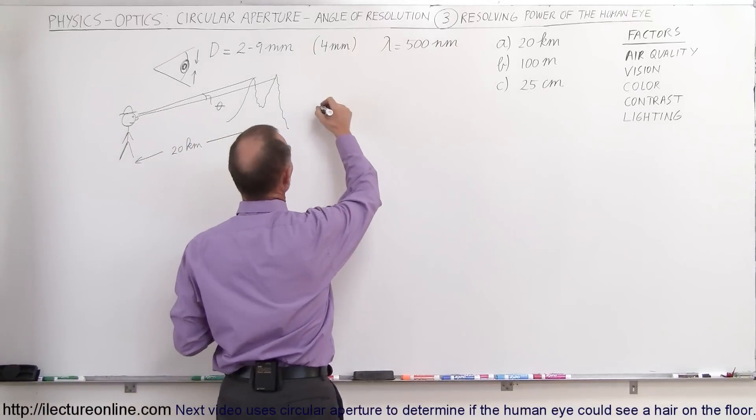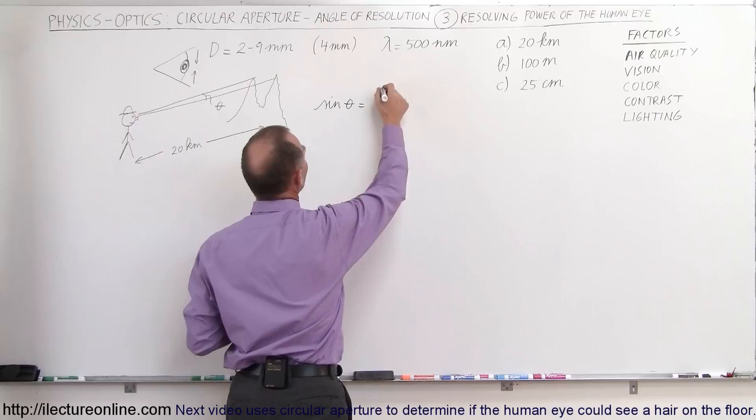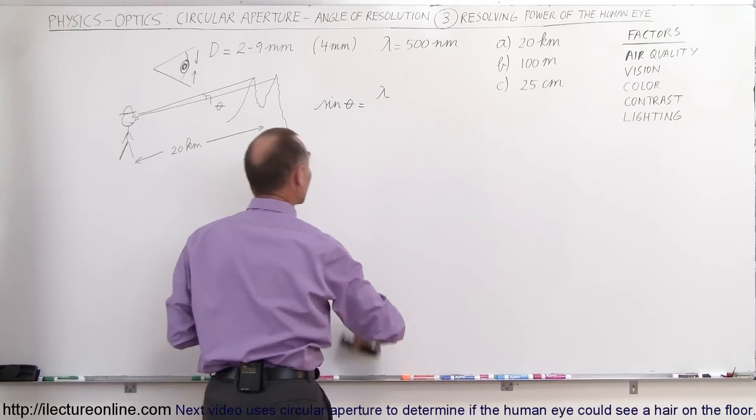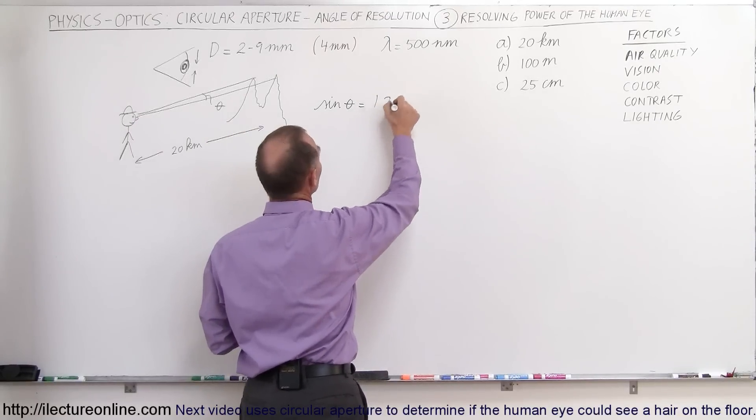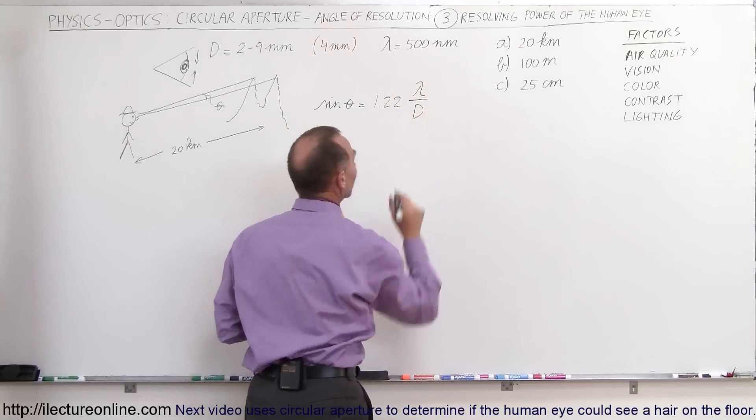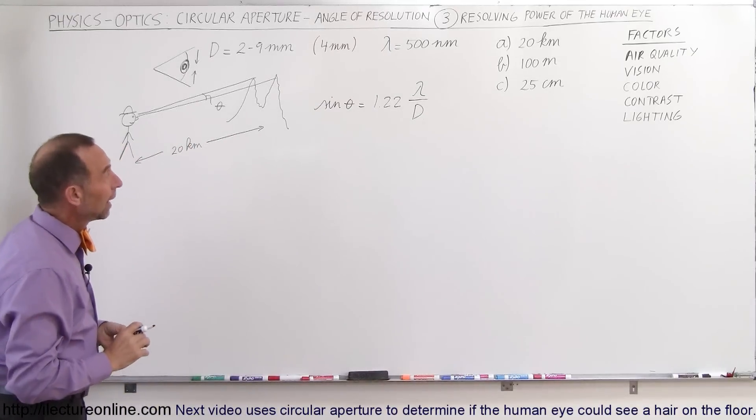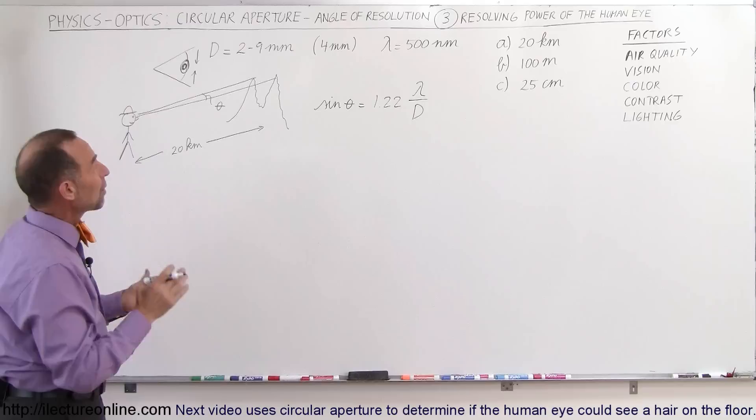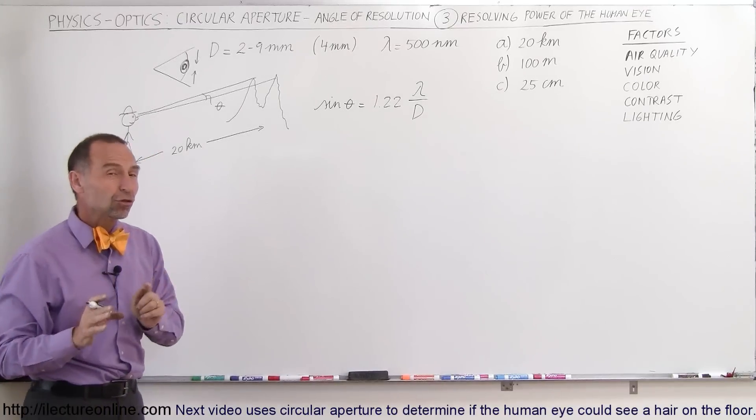we need the equation that the sine of theta is equal to the wavelength, not the way we're missing our very famous constant of 1.22, 1.22 times the wavelength divided by the diameter of the aperture. In this case, the aperture is the pupil of the eye. And so what do we want to know? Well, we want to know the distance between them. Well, we'll get to that in just a moment.